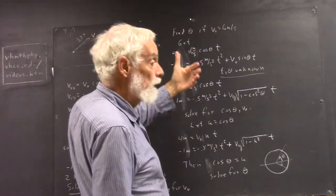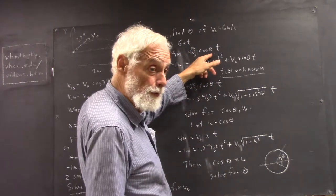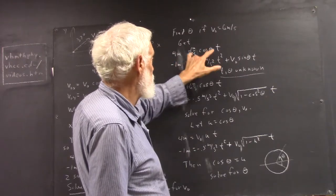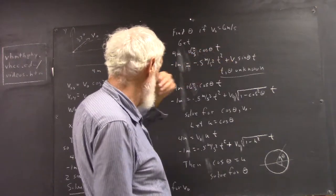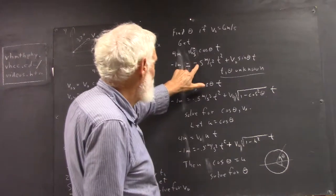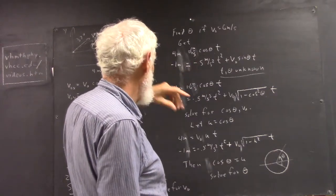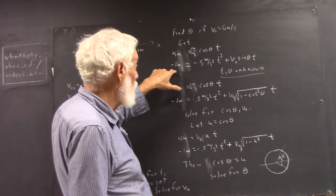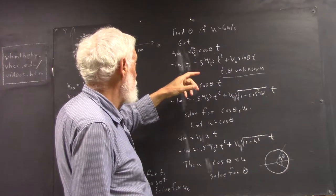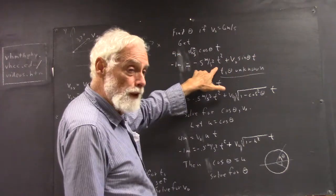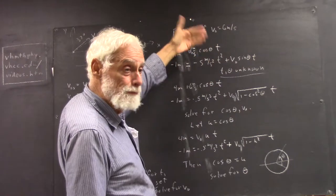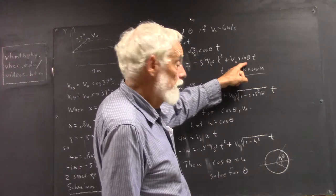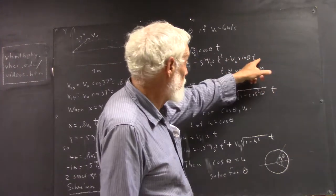If your initial velocity is 6 meters per second, then your initial x velocity is going to be 6 meters per second times cosine theta. So your 4 meters will equal 6 meters per second times cosine theta, your initial x velocity times t. Your y is going to be negative 1 meter, and that's going to equal negative 1 half at squared, where the acceleration is negative 10 meters per second squared, plus your v naught sine theta, which is your initial y velocity times t.